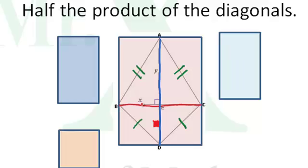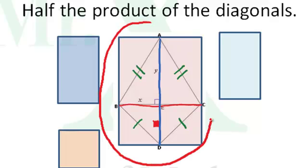If we multiply them together, we'd have the area of this rectangle. Length times width. We'd have the whole rectangle.